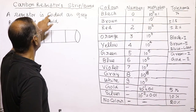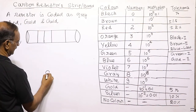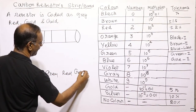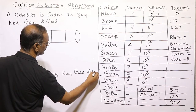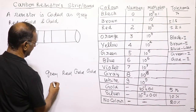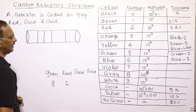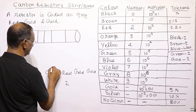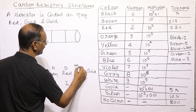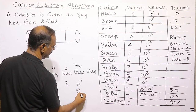A resistor is coded as gray-red-gold-gold. For gray, the digit is 8. For red, the digit is 2. The third band is gold acting as the multiplier, which is 10 to the power minus 1, or 0.1. The fourth band is gold representing tolerance.